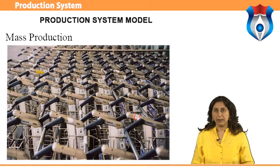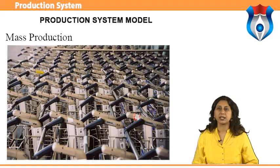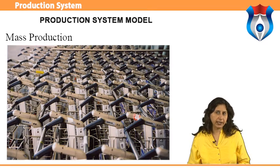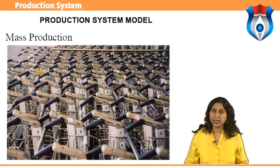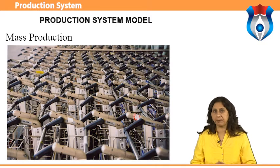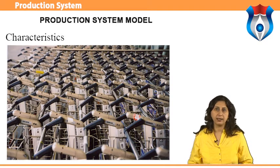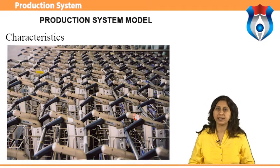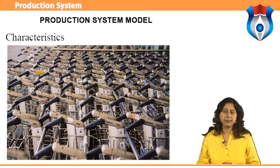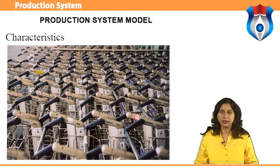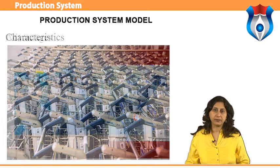Mass production refers to the manufacture of discrete parts or assemblies using a continuous process. This production system is justified by a very large volume of production. The machines are arranged in a line or product layout, and product and process standardization exists — all outputs follow the same path. It is used under circumstances such as standardization of product and process sequence, dedicated special purpose machines with higher production capacities, large volume of products, and shorter cycle time of production.